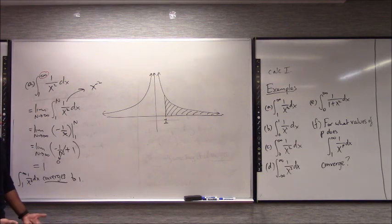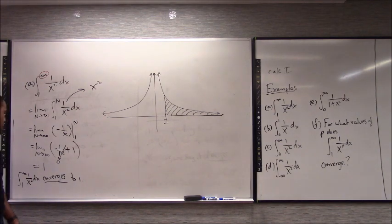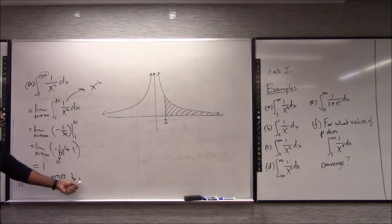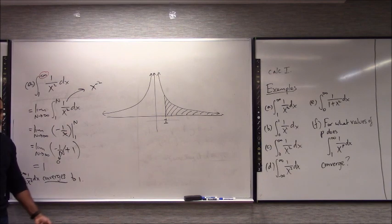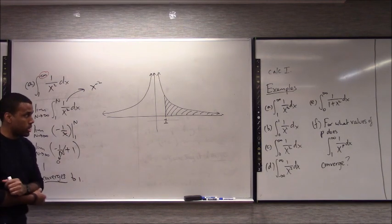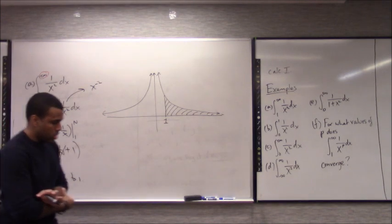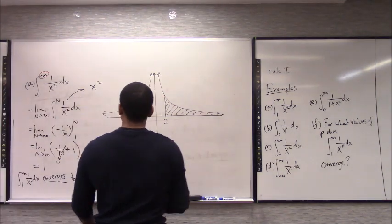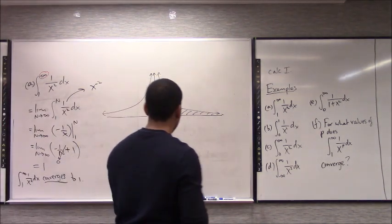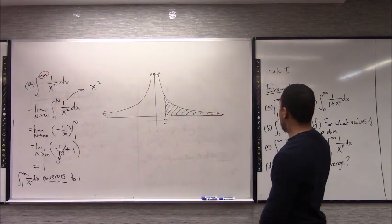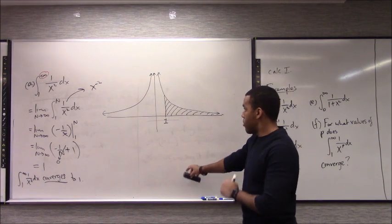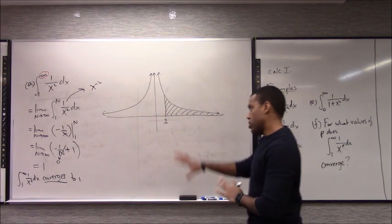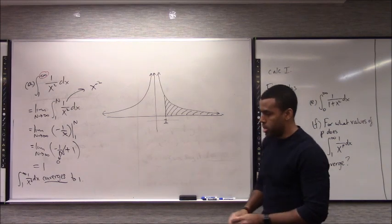It would be wrong to say that the area is infinity — it definitely doesn't go that large. It never passes 1, but if you pick any number smaller than 1, eventually the area will surpass that value. So it has to be equivalent to 1; it can't be anything else. That's how you can interpret this, and that's how you do a full problem. This is one way you can interpret it geometrically.